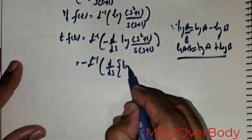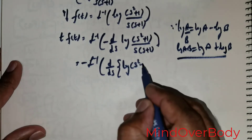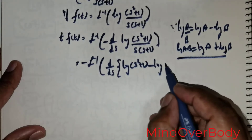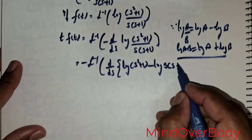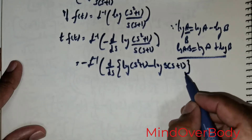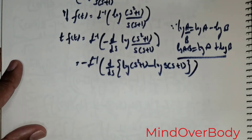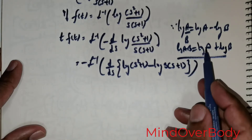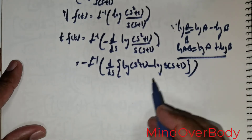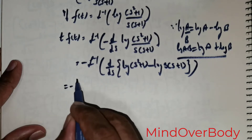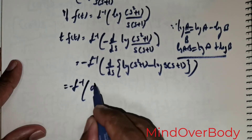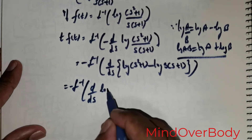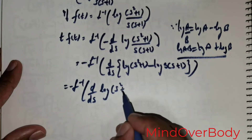So with this, I am going to rewrite this as log of s squared plus 1, minus log of s into s plus 1. Now I can further use log of ab equals log a plus log b for this logarithmic component. So this is going to be negative L inverse of d over ds of log of s squared plus 1.